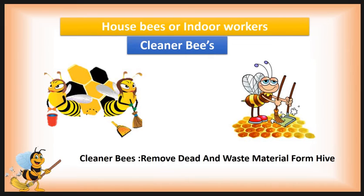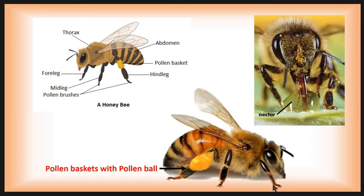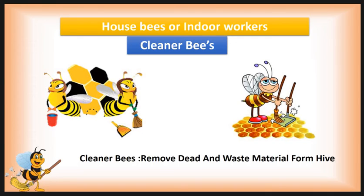In the indoor workers, the first is the cleaner bee. Cleaner bees remove dead and waste material from the hive. Cleaner bees have a pollen brush present on the prothoracic and mesothoracic legs — the hairy structures on these two legs help in cleaning other bees and the beehive. Cleaner bees clean forager bees using the pollen brush, and also remove dead and waste material from the hive. One to two day old worker bees perform this work.